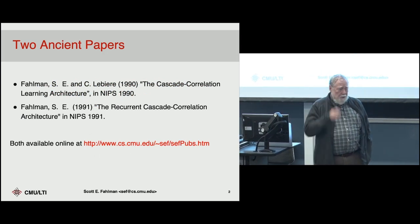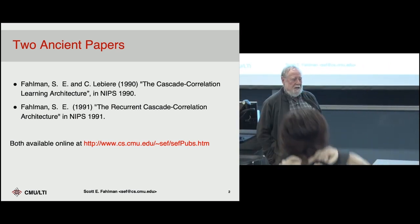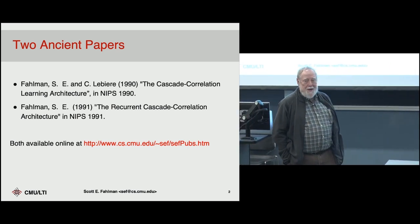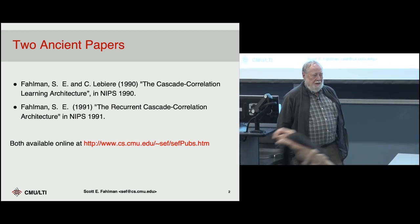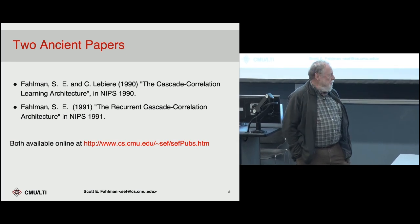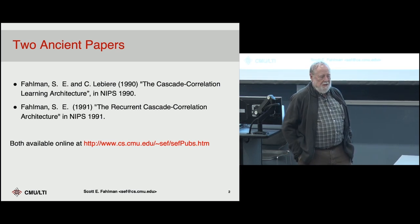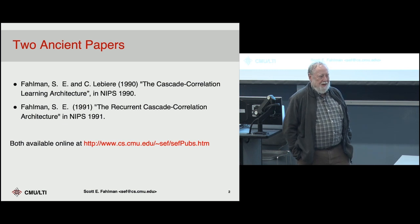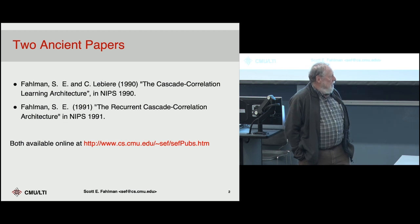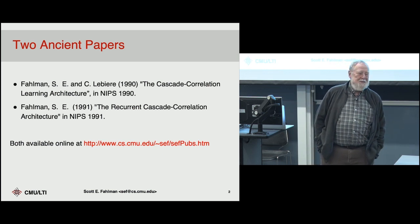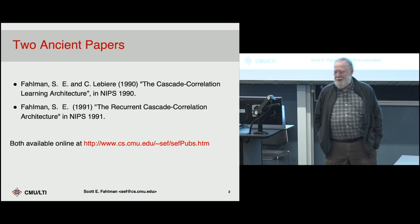What I'll be talking about was published in 1990 and 1991. There are two ancient papers on it. If you just Google Fahlman cascade correlation, you'll find those papers, or you can access them off my home page. They were both published in what we're supposed to call it now, the NeurIPS Conference. At the time, it was called the NIPS Conference, and that is now deemed to be improper.